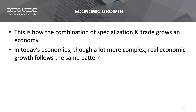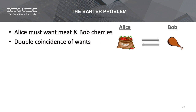We begin to understand how the combination of specialization and trade grows the economy. Even though today's economies are much more complicated, the dynamics are the same. Different parts of the economy and even different countries tend to specialize in certain things and be able to produce a lot of them. Then they have the need to trade that surplus with some other party. After that trade happens, it's a win-win and both parties now have more value. The more trade that happens, the larger the economic growth. So if we want a better economy, we would want to encourage people to engage in production and exchange. Anything that facilitates trade is a plus.